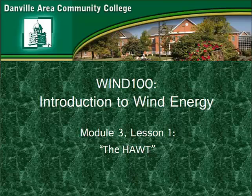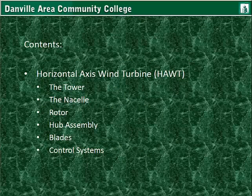This is Lesson 1 for Module 3, the Horizontal Axis Wind Turbine. I will explain the Horizontal Axis Wind Turbine, its specific components: the tower, the nacelle, rotor, hub assembly, the blades, and a little bit on control systems.